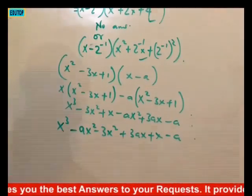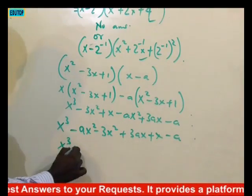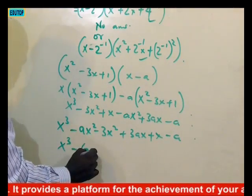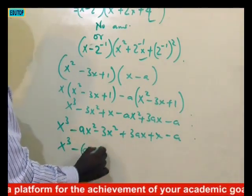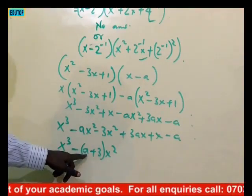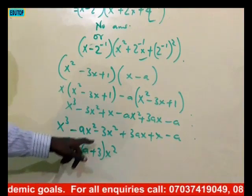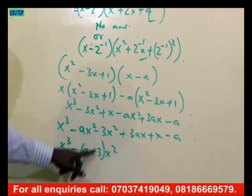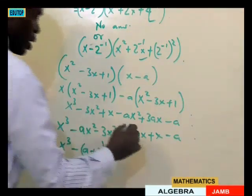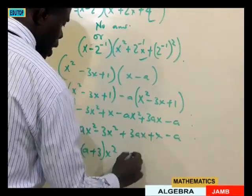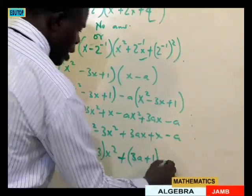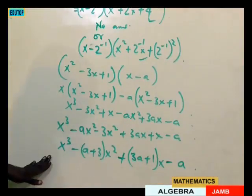So now I collect like terms. I have x cubed. What is common in the x squared terms? I factor out x squared, giving minus a plus 3 — but be very careful with signs: because I brought the minus out, minus times minus is plus. Then for the x terms I have x common, giving 3a plus 1 of x, then minus a. That is the way to express the final answer.